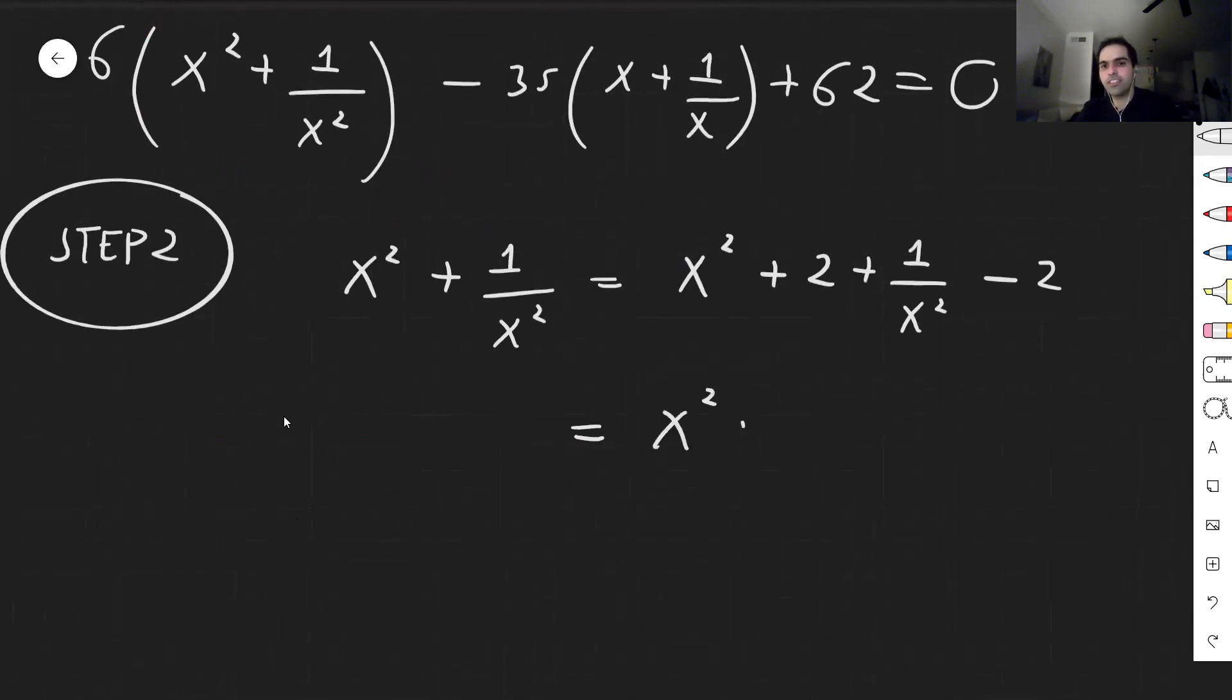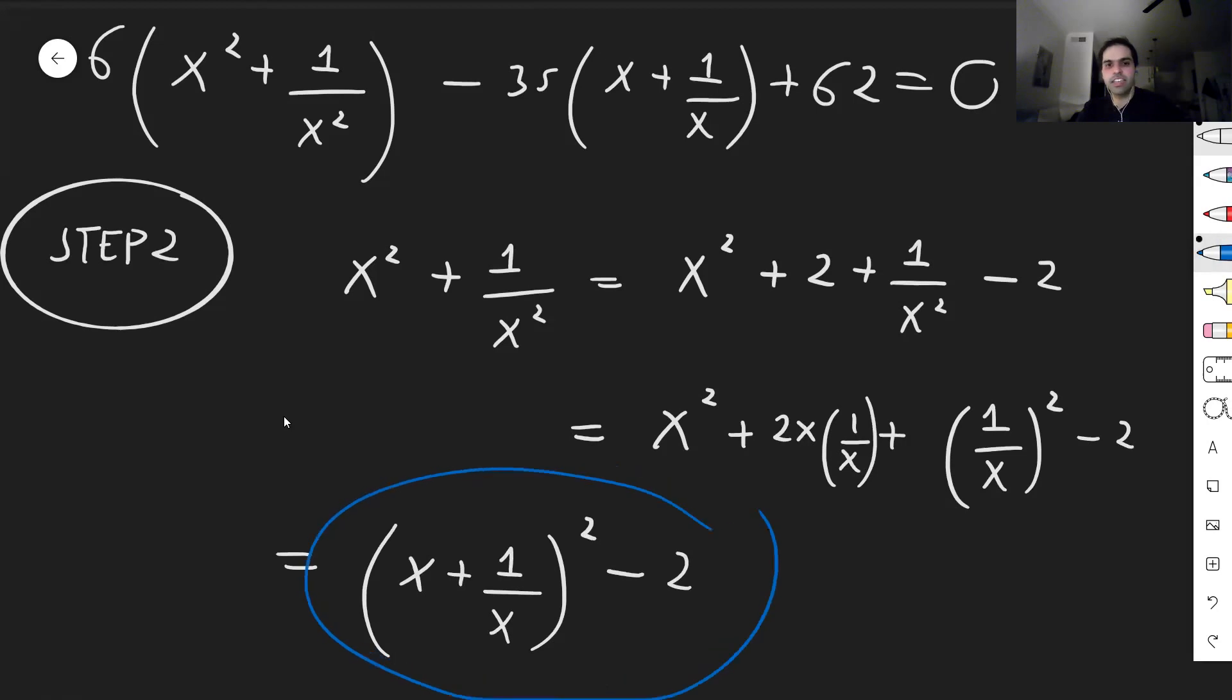And then it becomes a square because this is x squared. This is 1 over x squared. And this becomes 2 times x times 1 over x, and then minus 2. So in fact, this whole thing becomes a square. It becomes the quantity x plus 1 over x, squared, minus 2. And this thing we can just plug into here.